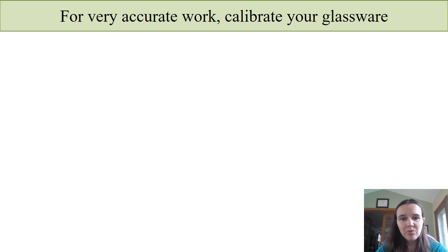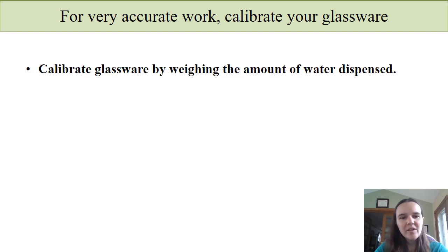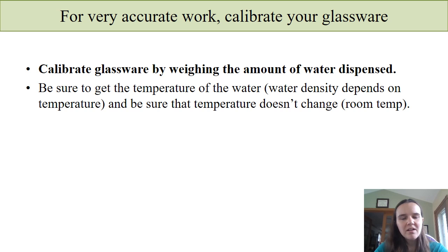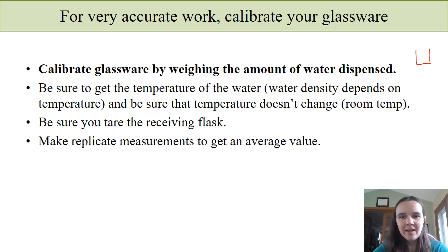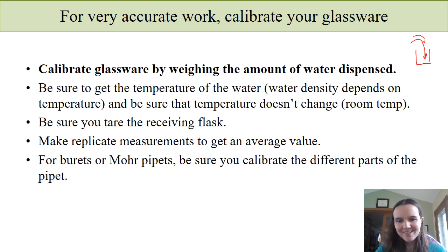If you're going to do really accurate work, you need to calibrate your glassware — that includes pipettes whether it's plastic tips on a micropipette or actual glassware. You do that by weighing the amount of water dispensed. Using distilled water at a known temperature, you can use water's density at that temperature to figure out the actual volume. Put a receiving flask on the balance, tare it to zero, add liquid multiple times to get replicate measurements, and that mass of water added lets you calculate the actual volume. If you have a burette or Mohr pipette, make sure you calibrate different parts — top, middle, bottom — because those might actually differ as you go down.